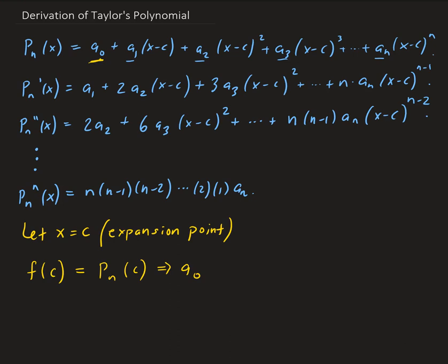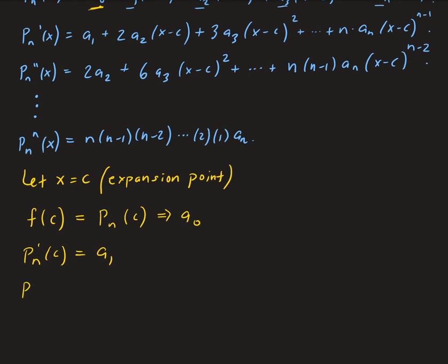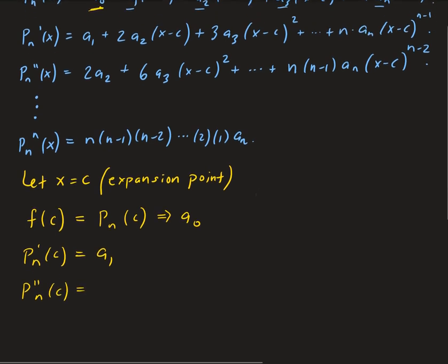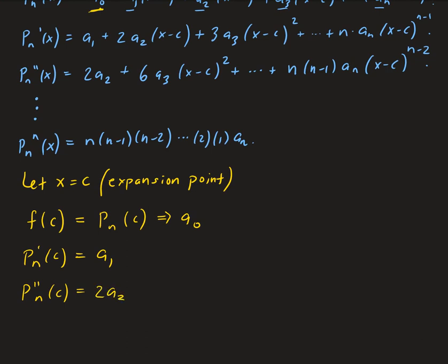Let's do the same for the others. P prime evaluated at c gives us a1. P double prime evaluated at c gives us 2a2. Continuing this way, the nth derivative at c is just a constant. Going back to that expression, notice that N times (N minus 1) times ... times 2 times 1 is n factorial, which I think most of you will recognize.